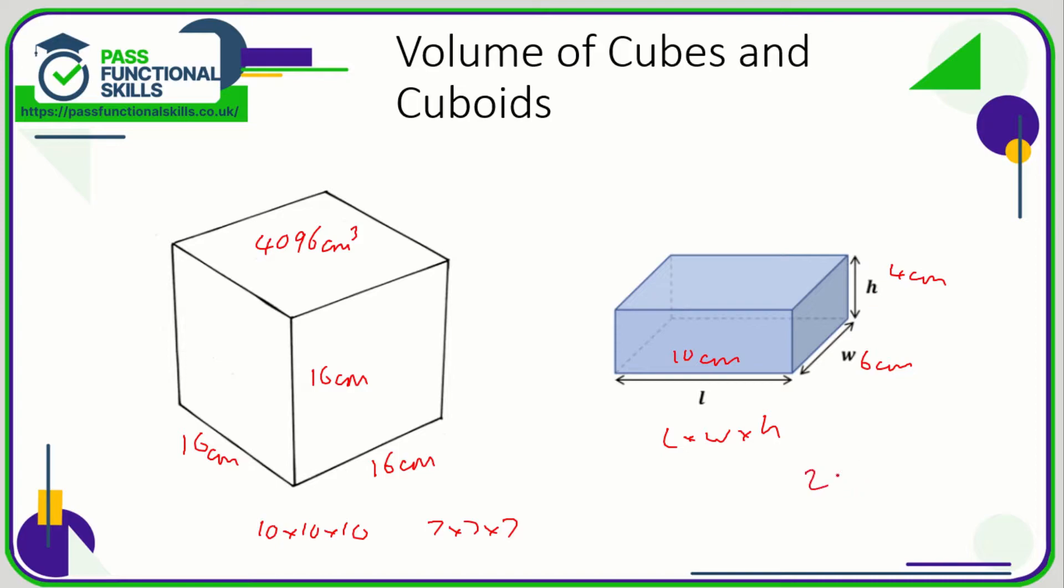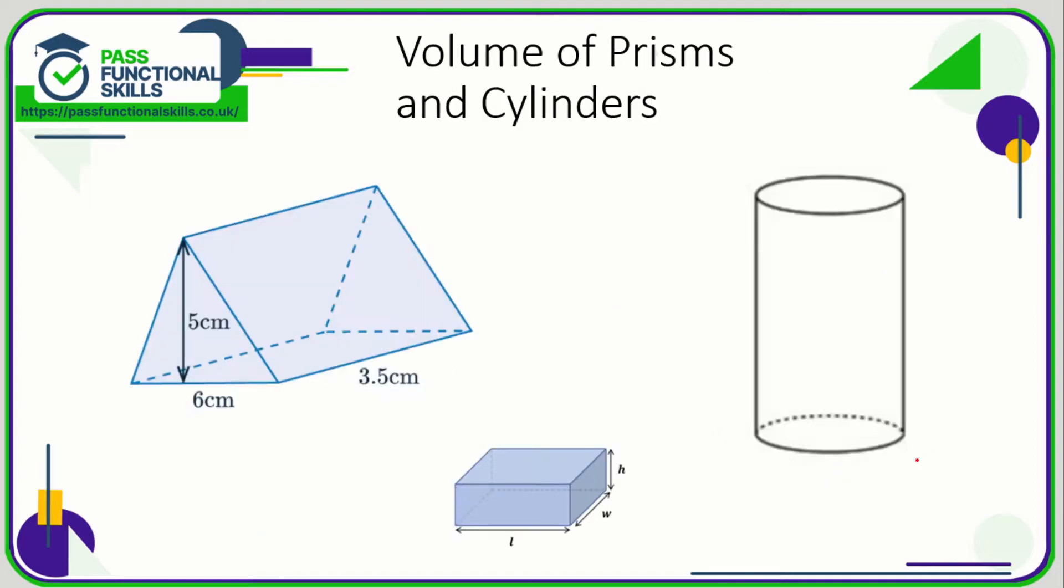Let's take a look now at prisms and cylinders. Before we do that, let's go back to our cuboid. It had a length of 10, a width of 6, and a height of 4. To work out the volume we did 10 times 6 times 4, which was 240. But if I work out the area of the front face, the area of the front face is 10 by 4 which is 40, and 40 times 6 gives us the 240 as well.